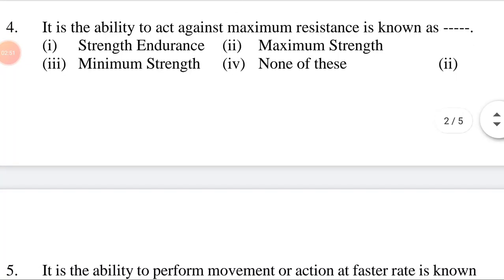The ability to act against maximum resistance is known as dash. First option: strength endurance. Second option: maximum strength. Third option: minimum strength. Fourth option: none of these. The answer is the second option — maximum strength. The ability to act against maximum resistance is known as maximum strength.